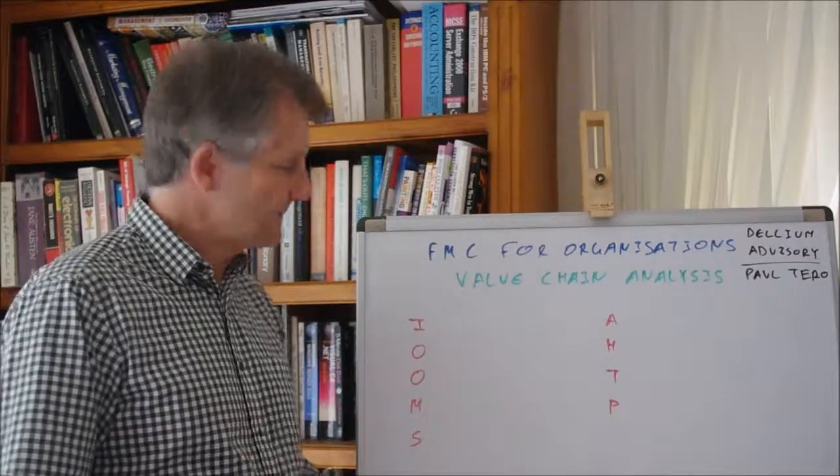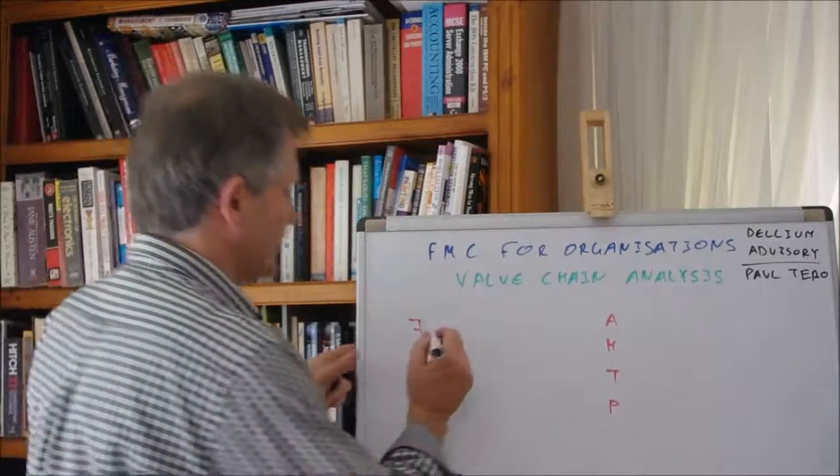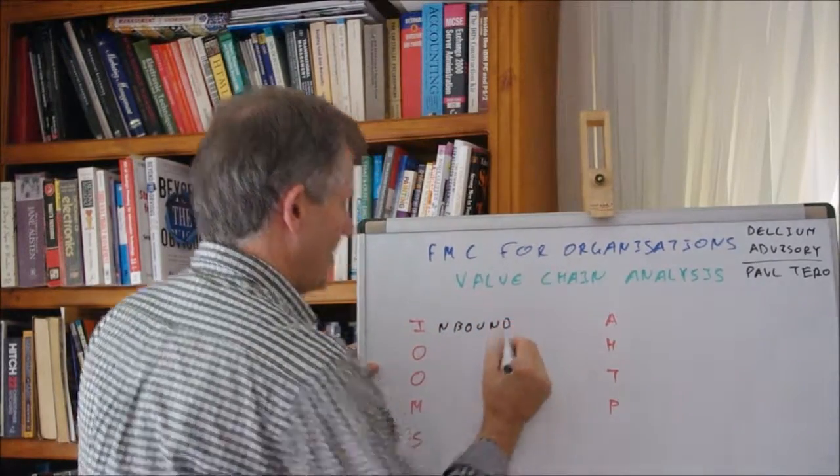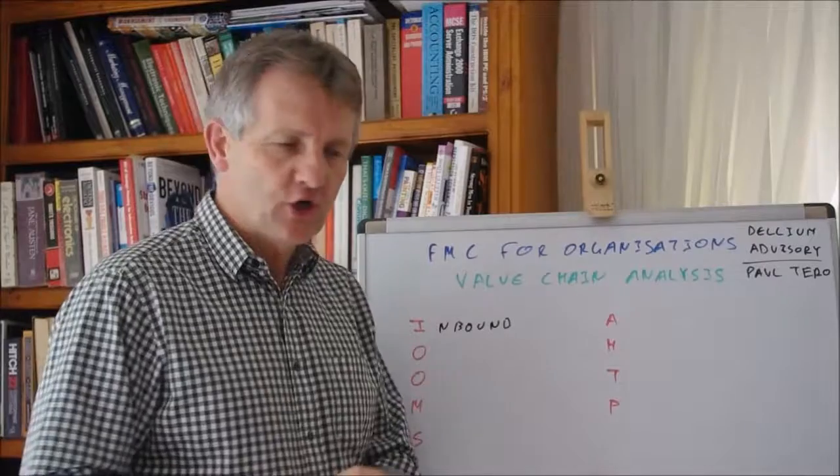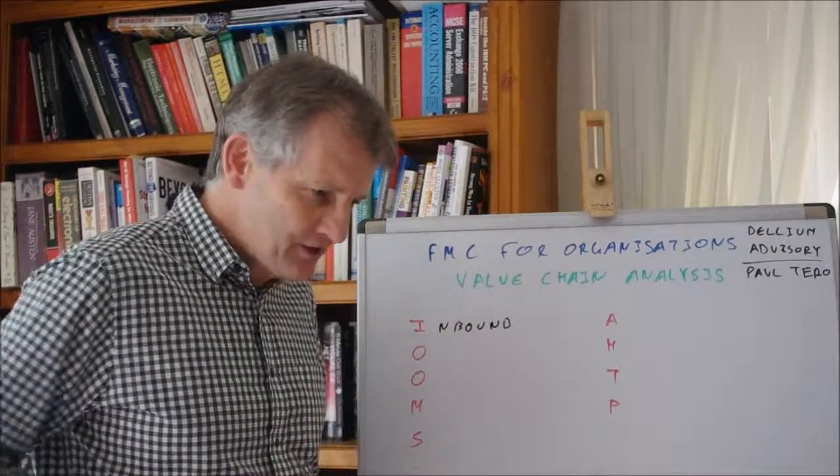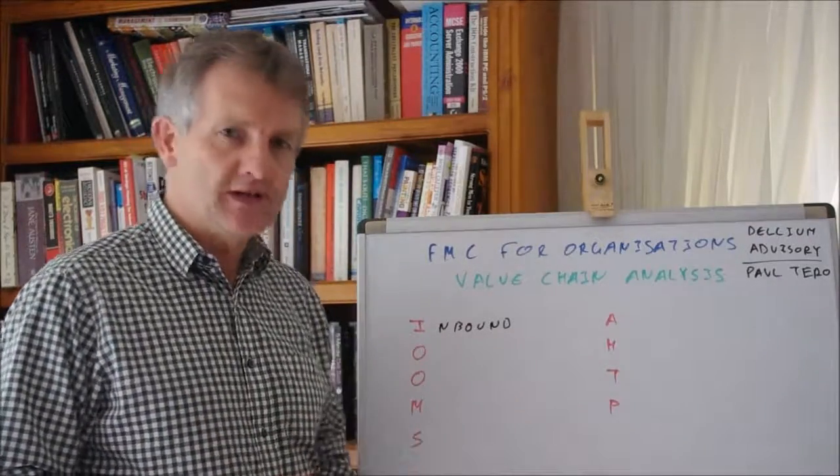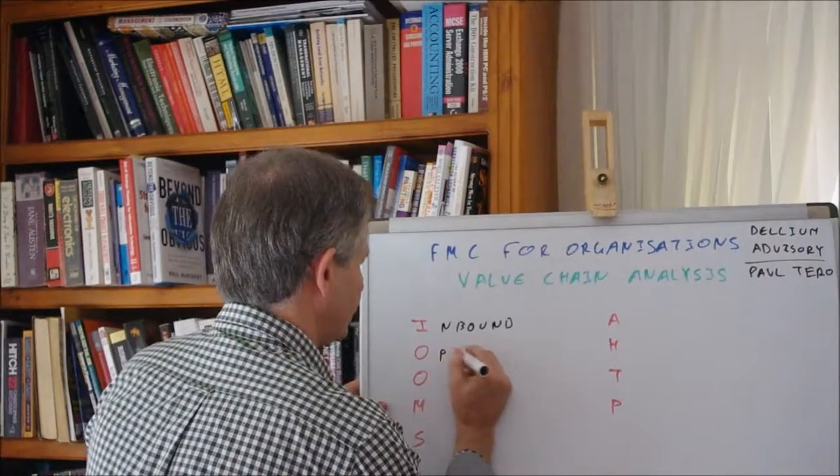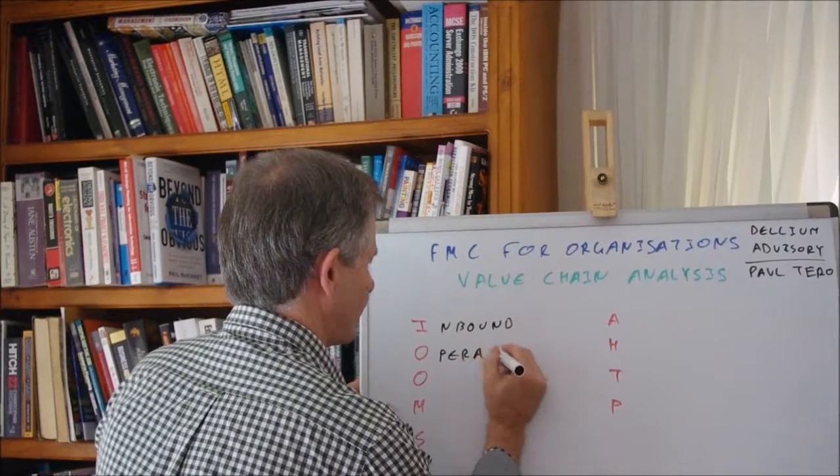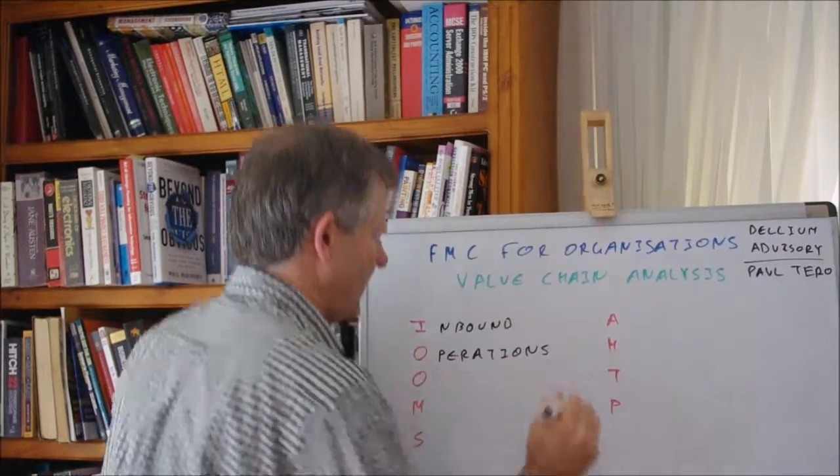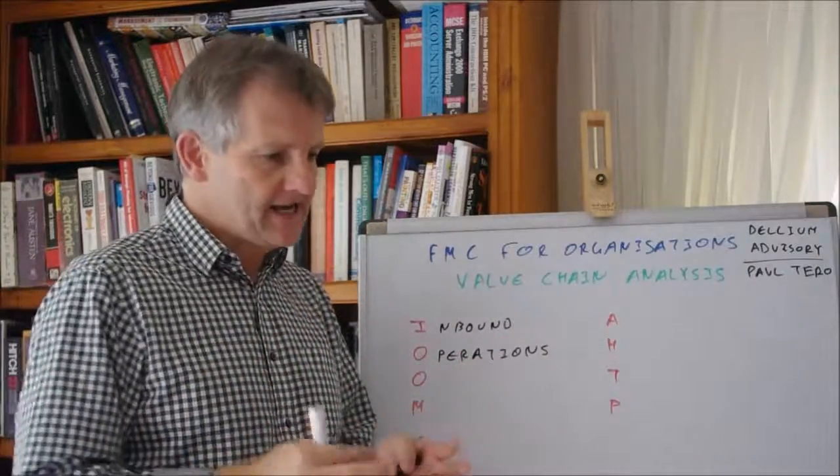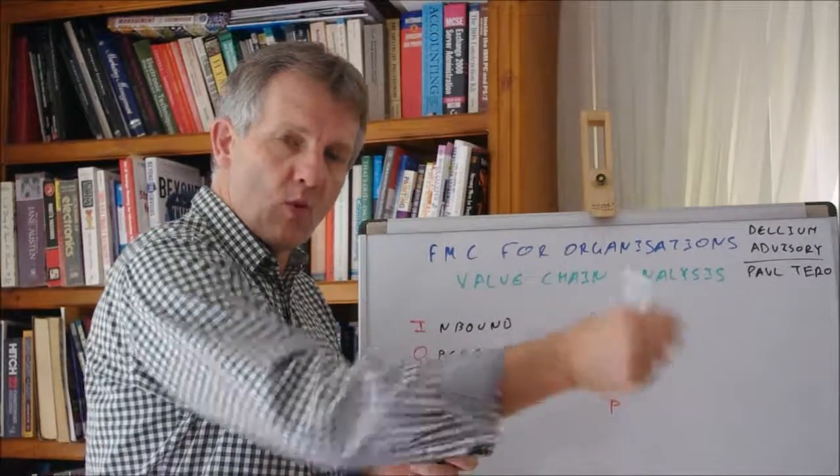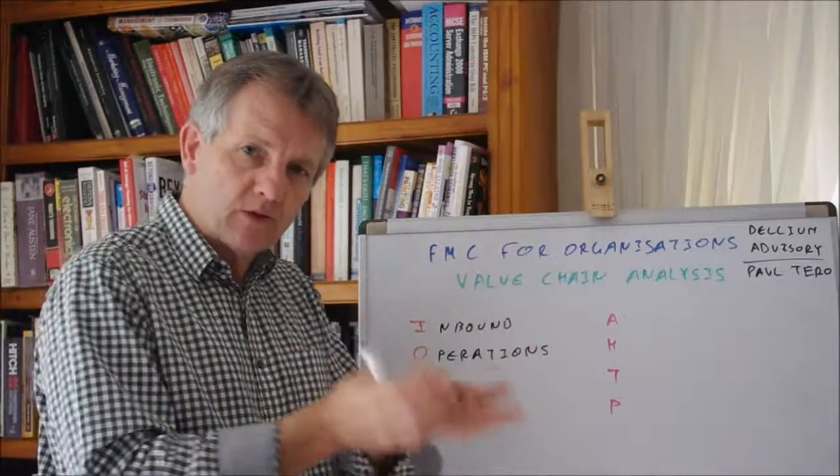So what are the primary activities? The first one stands for inbound - all those things associated with inbound. How do the raw materials get into the organization? O stands for operations - how are those raw materials converted into what you end up selling? What are the operations?